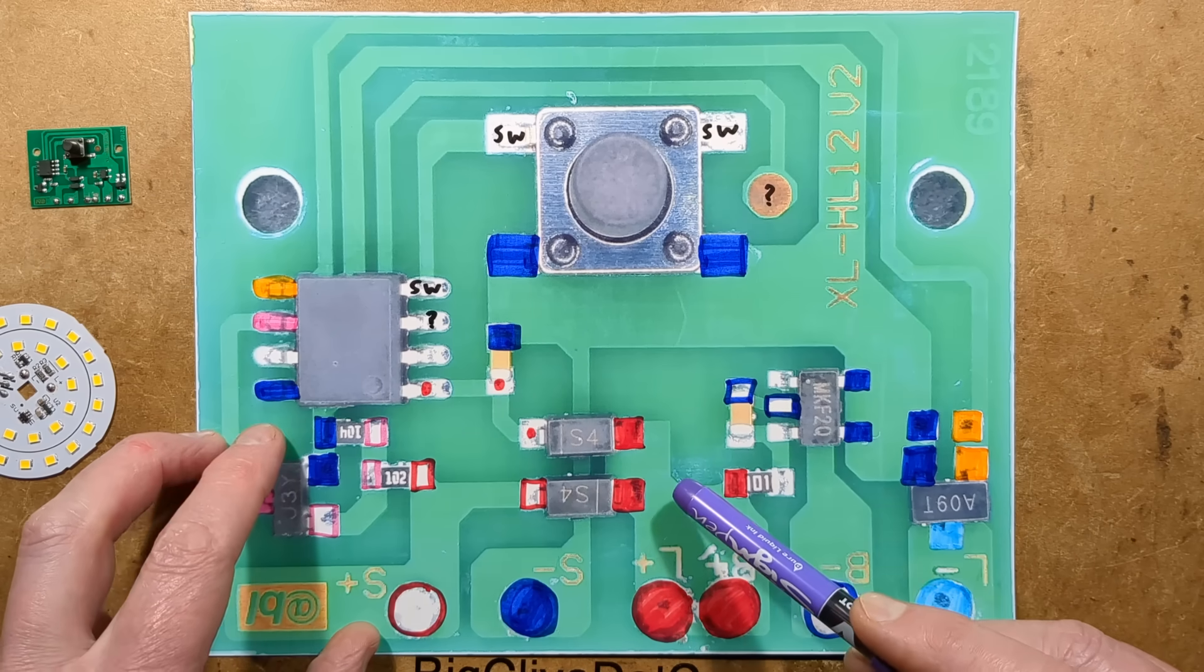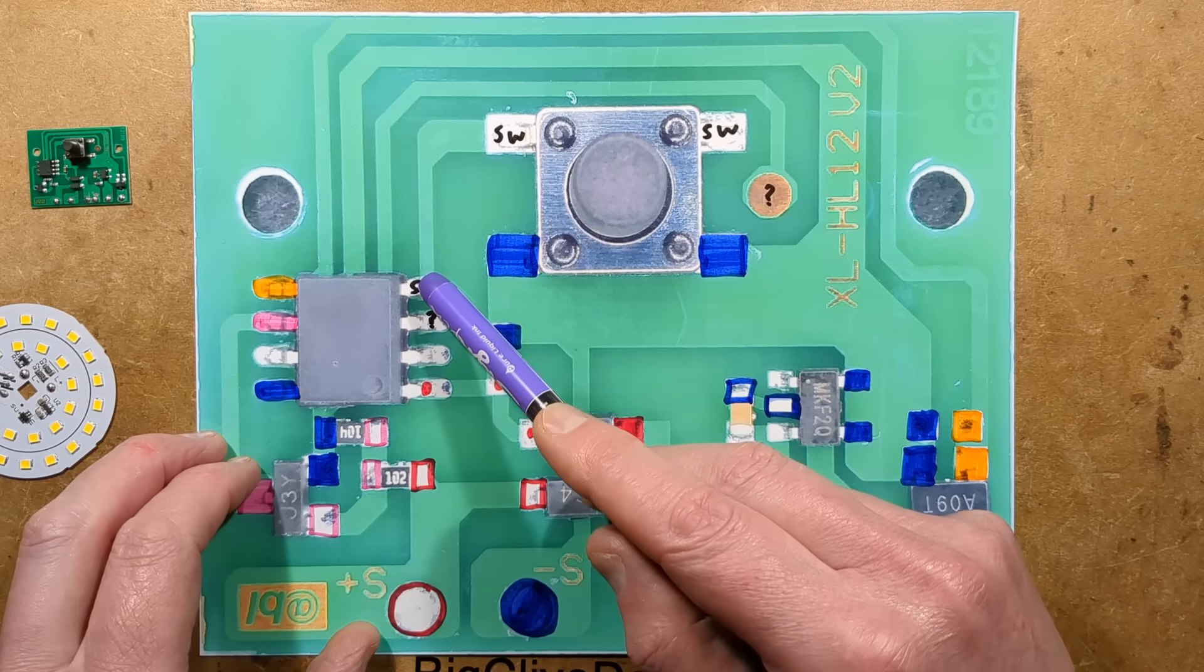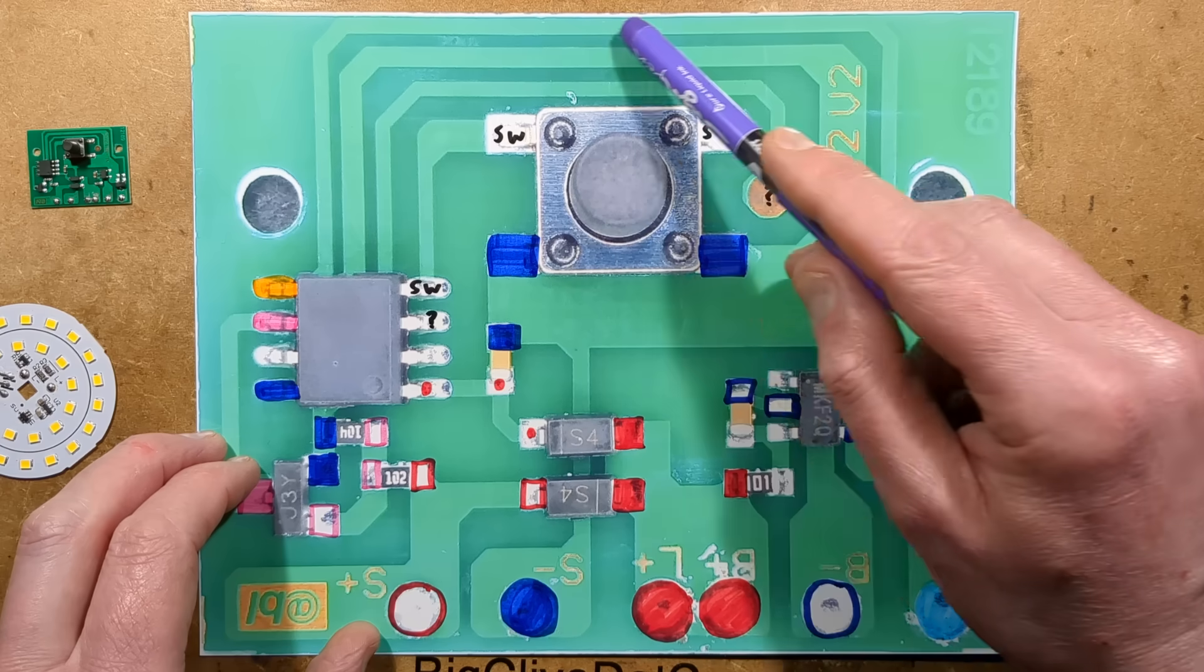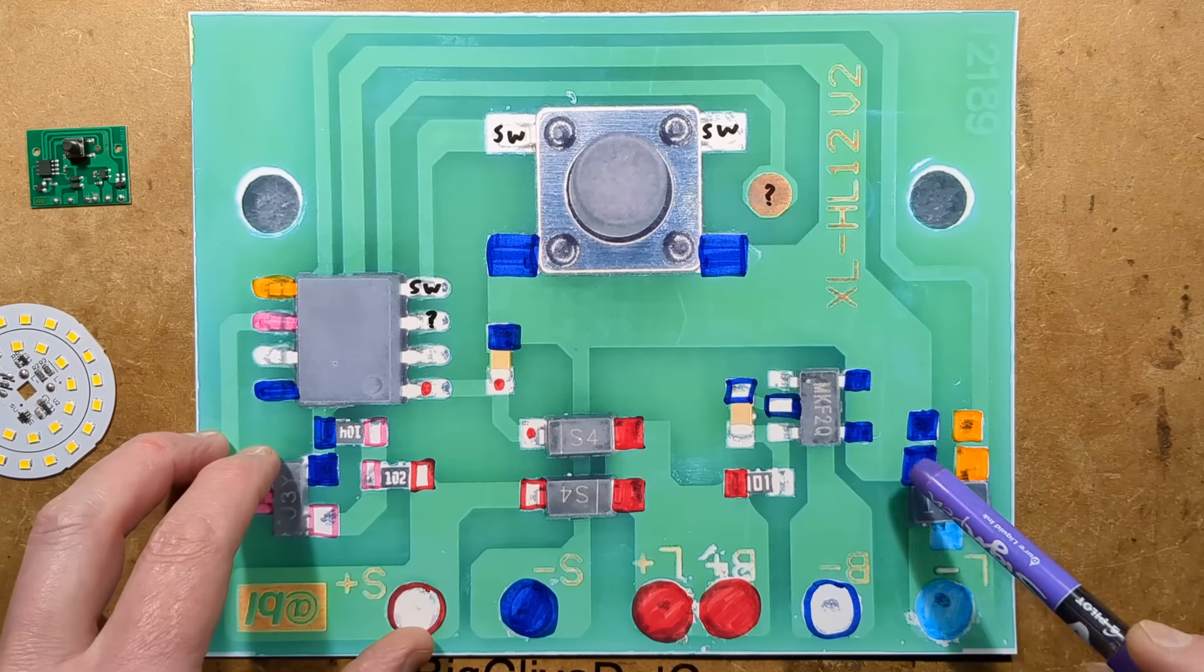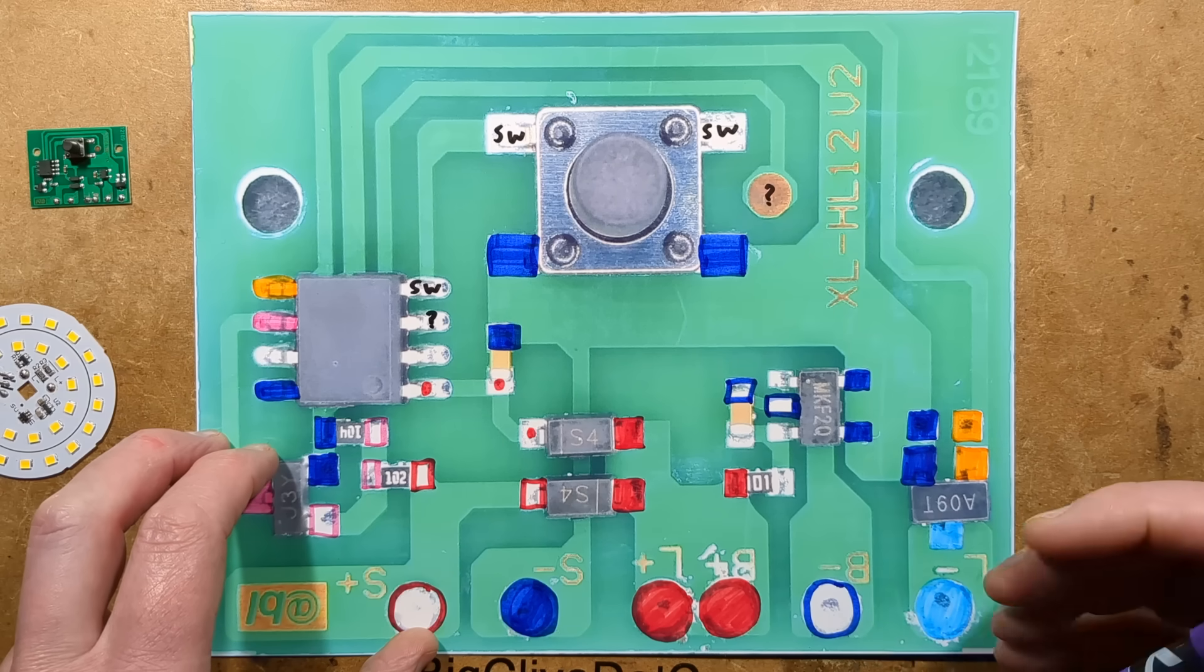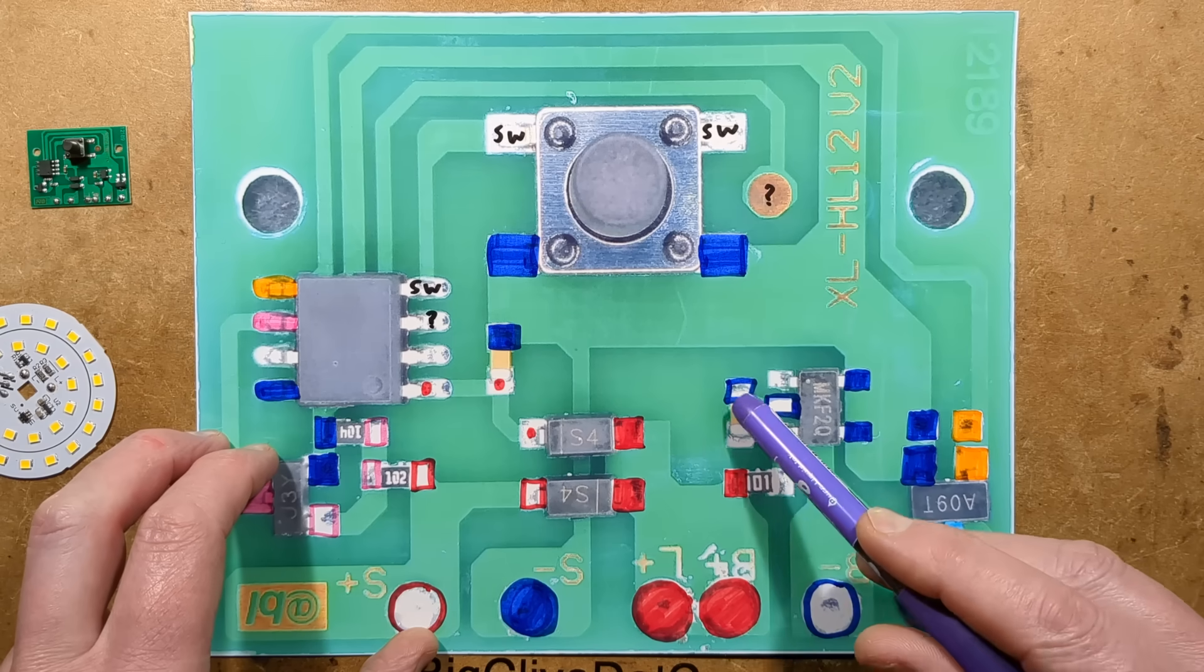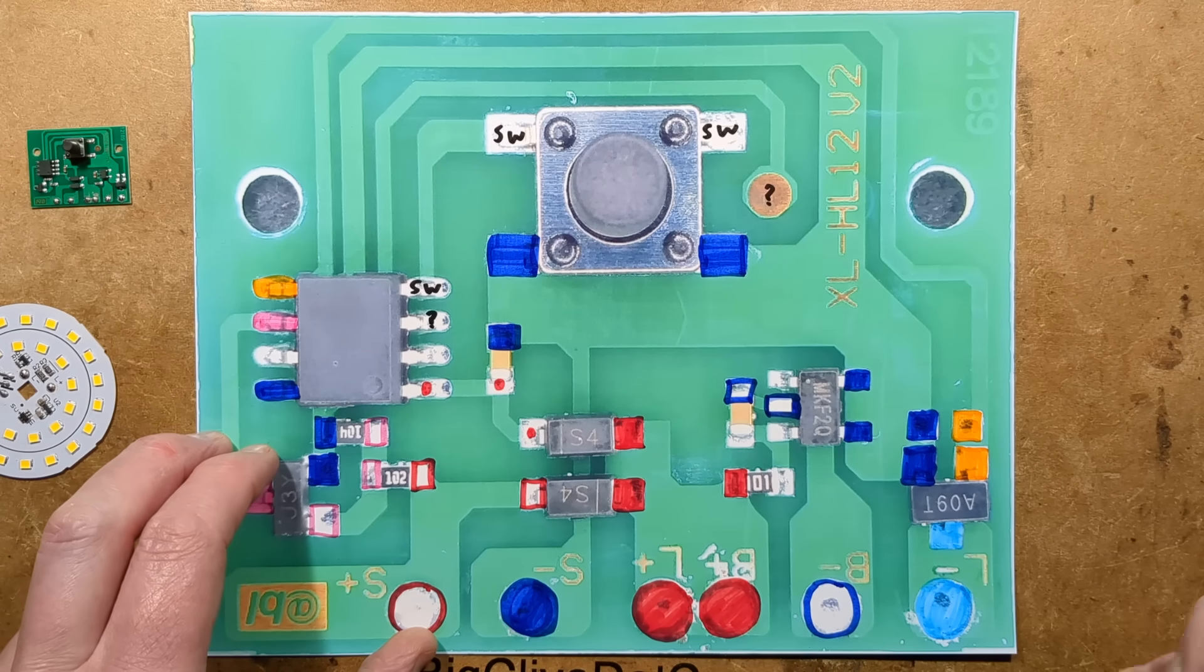The only other things the microcontroller has are a switch input and an output to the MOSFET which is an AO9T. This chip here is a cell protection chip for the lithium cell. It protects against overcharge and over discharge by monitoring the voltage across this little network and I'll show you that in the schematic too.